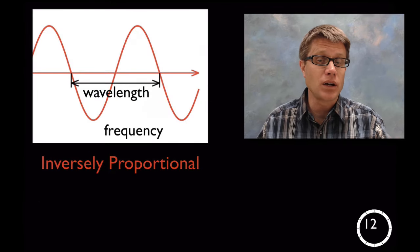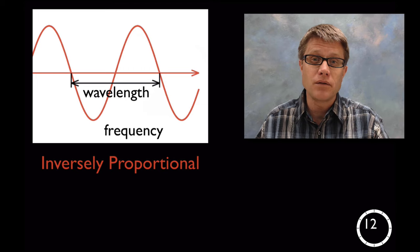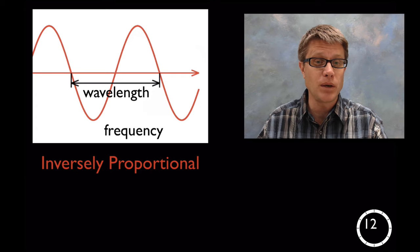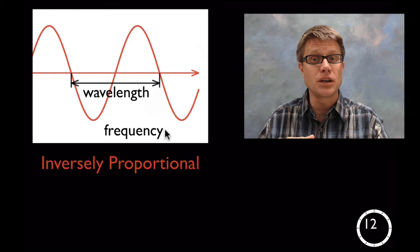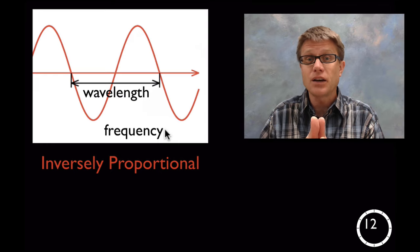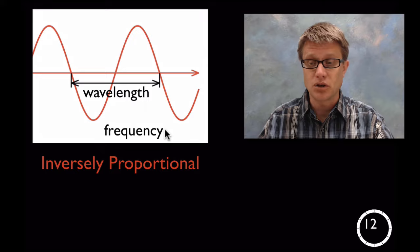As we move into high school we want to start to quantify this a little bit. And students should understand that wavelength and frequency are inversely proportional. What does that mean? As we increase the frequency, increase the number of waves we have in a given period of time, what's that going to do to the wavelength? It's going to make the wavelength get smaller. Likewise as we decrease the frequency we're going to have wavelengths that get much, much larger.